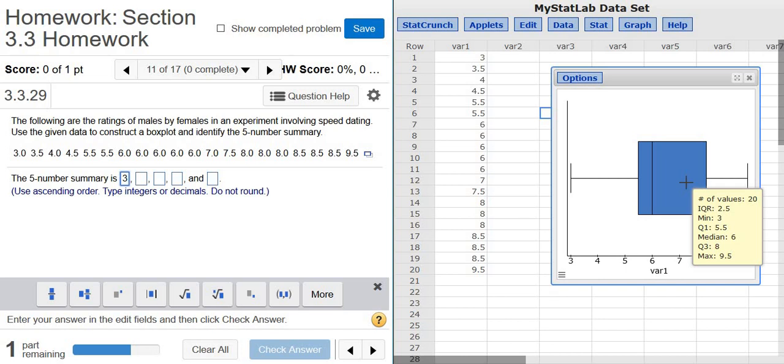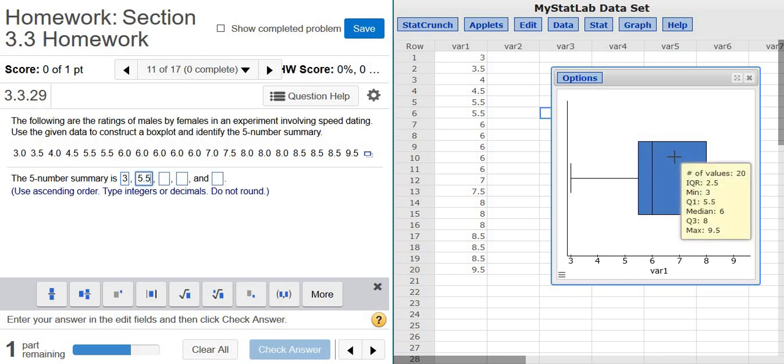Then comes Q1. That's 5.5. The next one is the median, which is also known as Q2. So Q2 is also the median. So that's going to be 6.